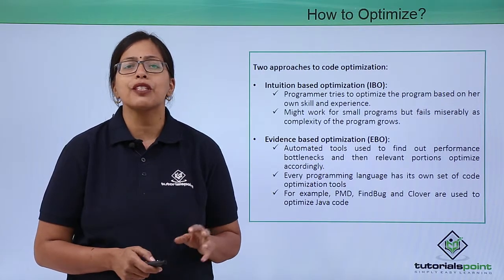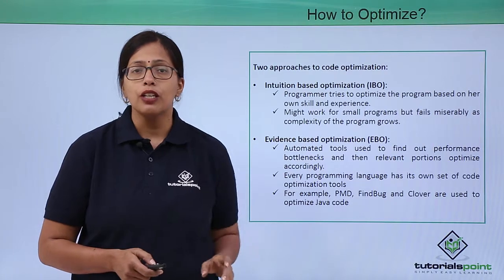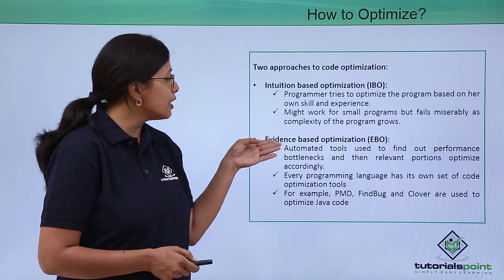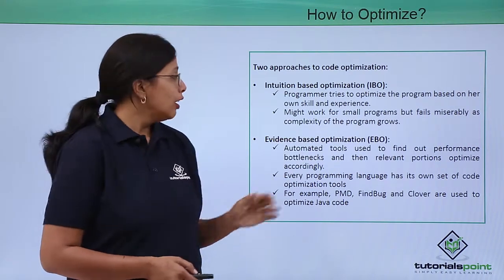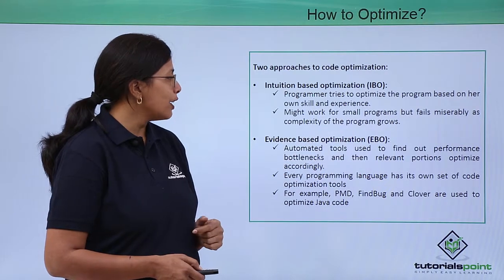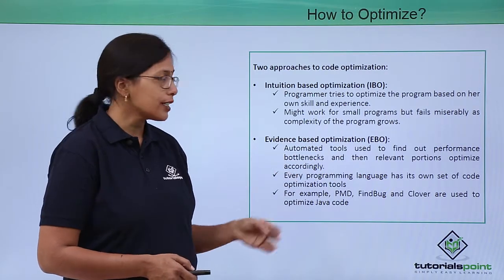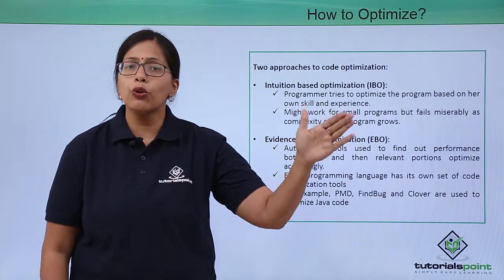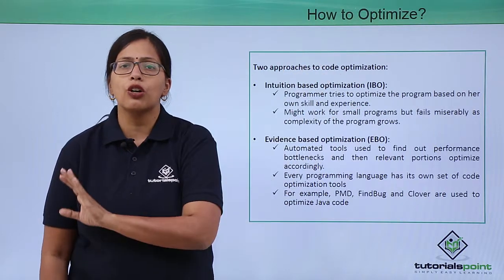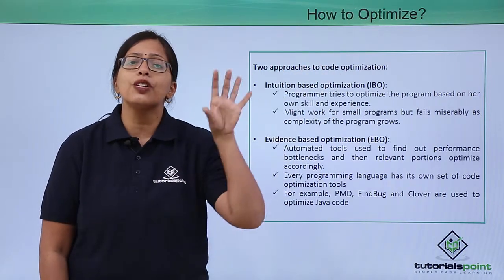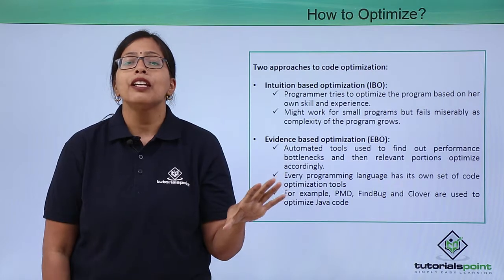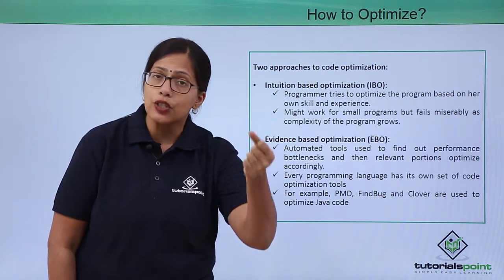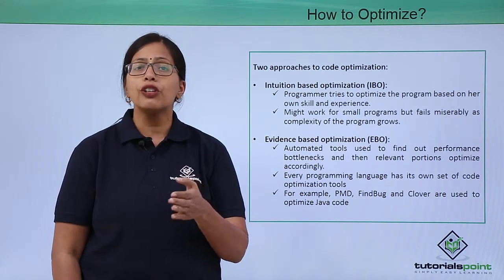Intuition-based optimization works only for programs that have a very low level of complexity. For complex programs, we use evidence-based optimization. Automated tools are used to find out performance bottlenecks, and then relevant portions are optimized accordingly. A whole chunk of program is run through that automated tool, and that tool tells you which part of the program is creating the bottleneck — which part is bringing down the efficiency, the speed, and overall performance of your software.